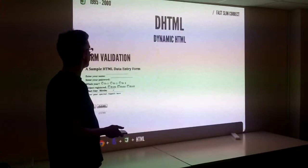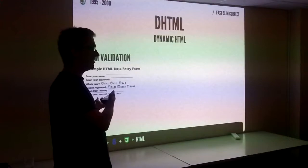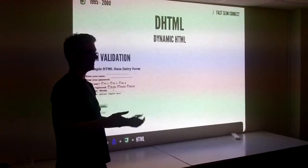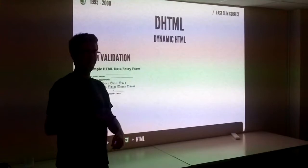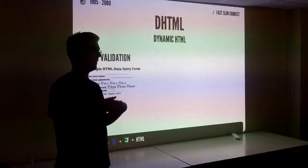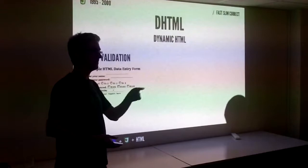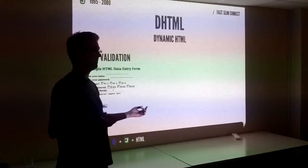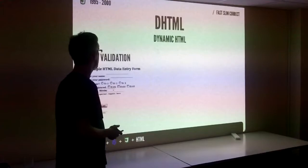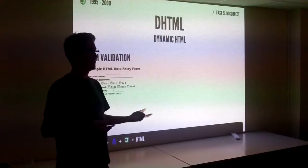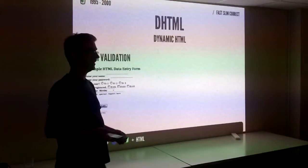Form validation was the most useful thing it did. If you imagine Amazon set up the year before: to buy a book you'd put in your credit card details, send them over the internet to the web server, and if anything was wrong they'd send you back another page. You'd ping-pong until everything was right. People were on dial-up — you didn't know if your credit card had been charged. It was an absolutely hellish user experience. Form validation let you check things before sending the page up.